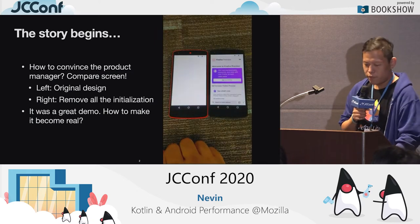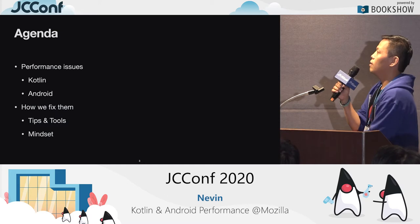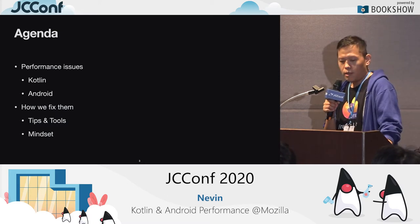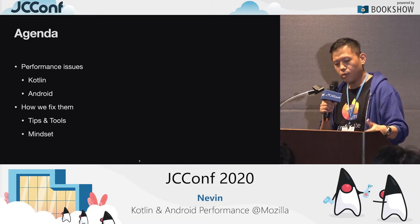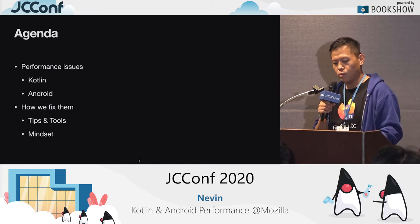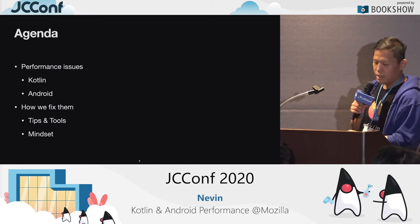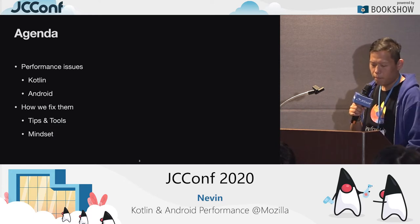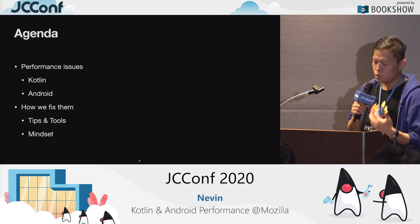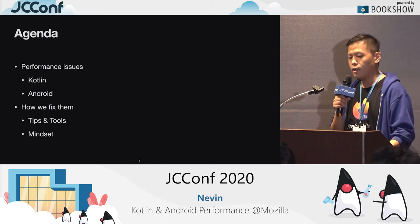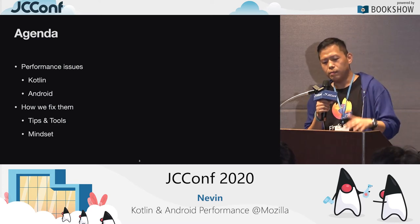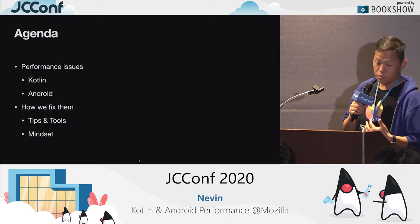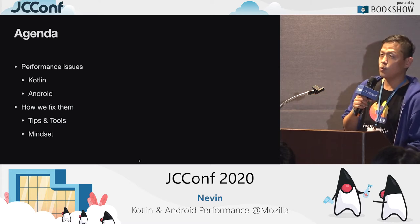We want to make it real — not just remove code, but keep the same features. So this is the agenda. First, I'm going to talk about performance issues we face, some Kotlin parts and some Android parts. Then I'll talk about how we fix them — tips and tools that we use. Last but not least, there's the mindset. Normally the videos on the internet are all about tools and tips, but not much about mindset, and that's the part that really blew my mind when working with Michael.